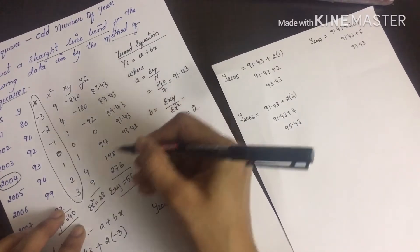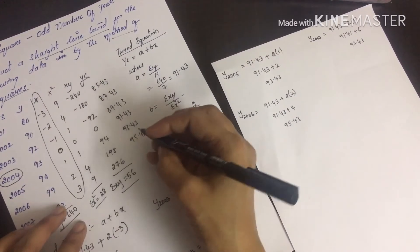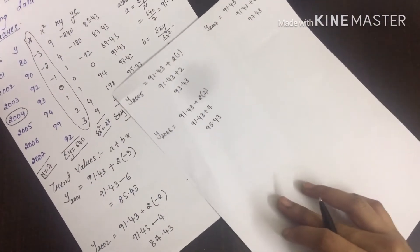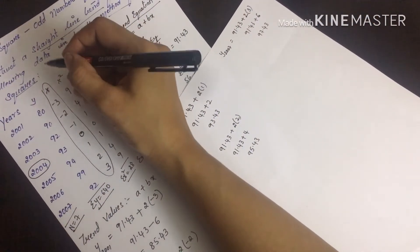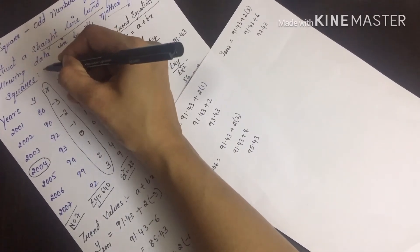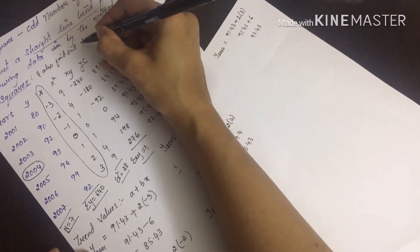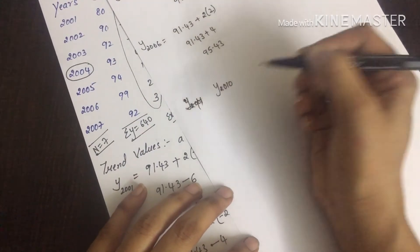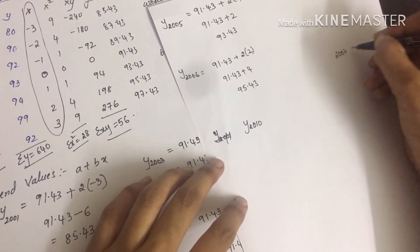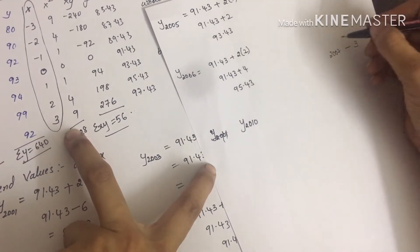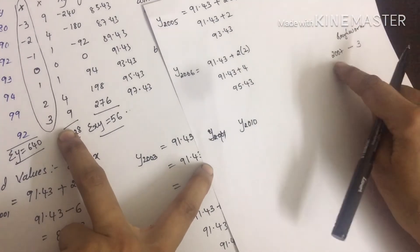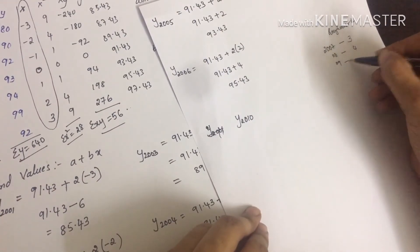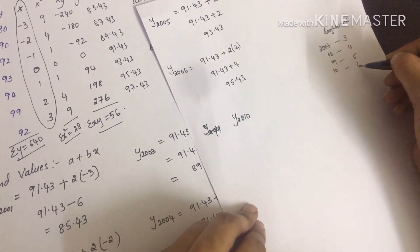Suppose the question asks you what is the trend value of 2010. This may be an add-on question: also find out the trend value of 2010. So what are you going to do? For 2010, we need to find the x value. In 2007, x is 3, so we do some rough work.